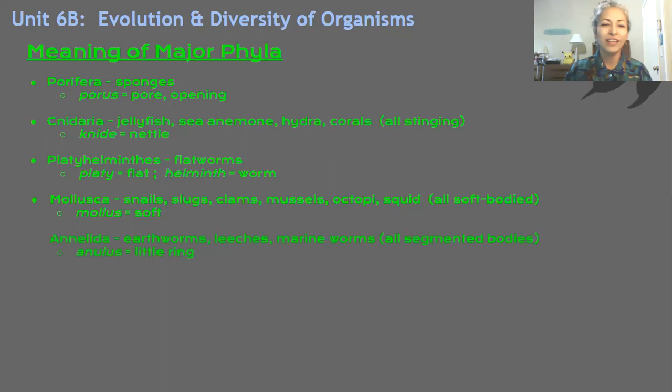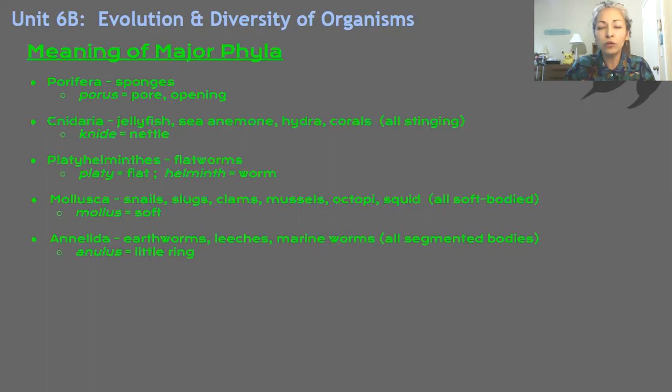Annelida — earthworms, leeches, marine worms. They're all segmented bodies. Remember, all those segments have a set of organs that do their specific job. The word Annelida comes from 'annulus,' which means little ring — meaning several little rings. Annelida: those creatures are several little rings put together. They're segmented.